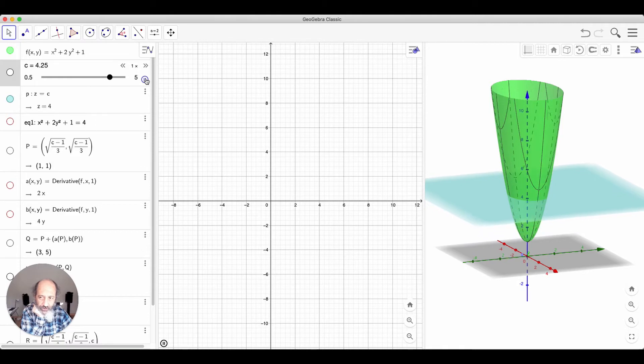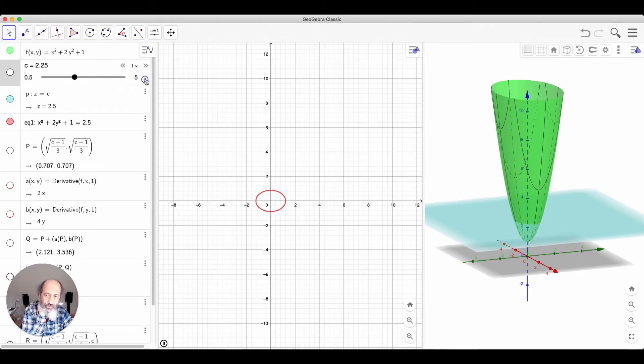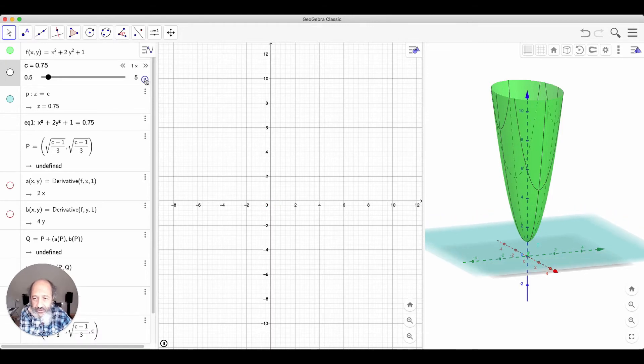The minimum takes place when x and y are both equal to 0 and the function is equal to 1. The level curves represented on the plane are ellipses because we have a factor of 2 in front of the y squared that are a little bit more flattened in the y direction.